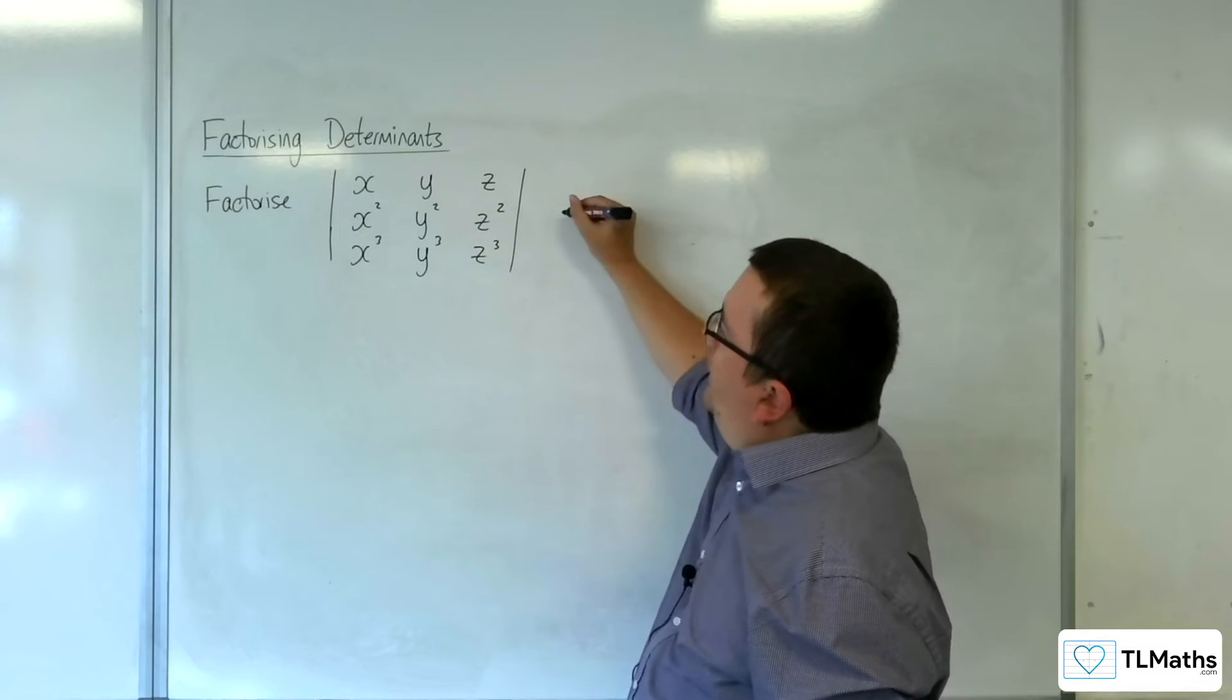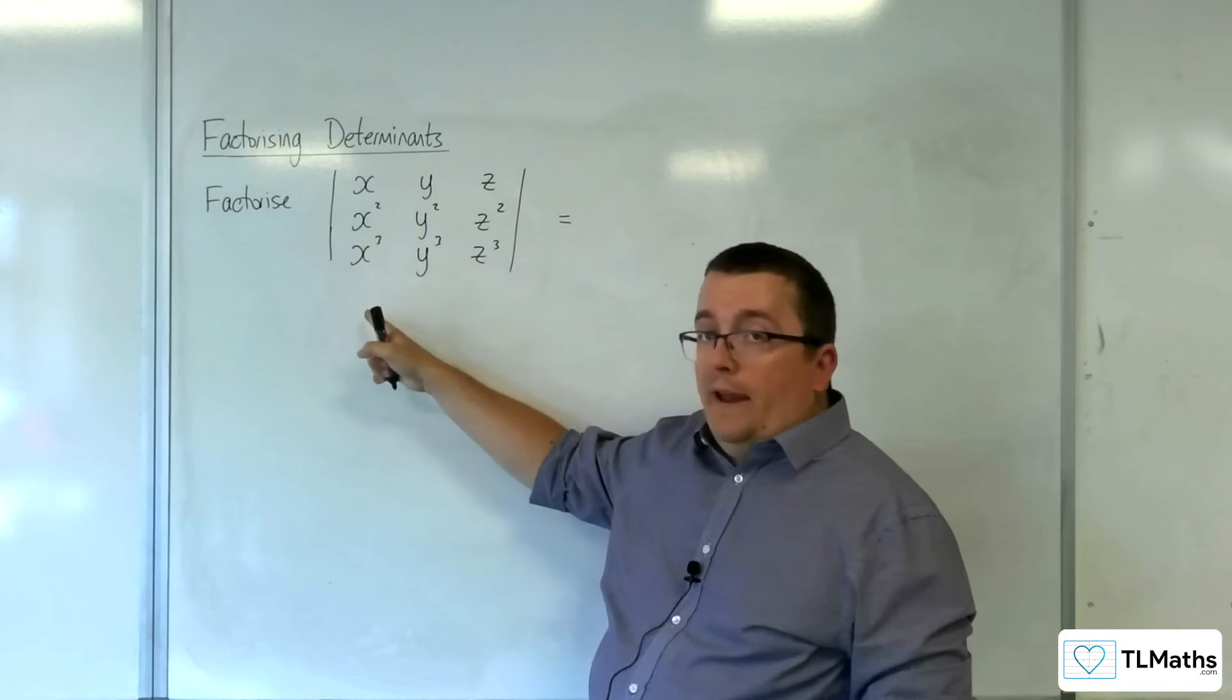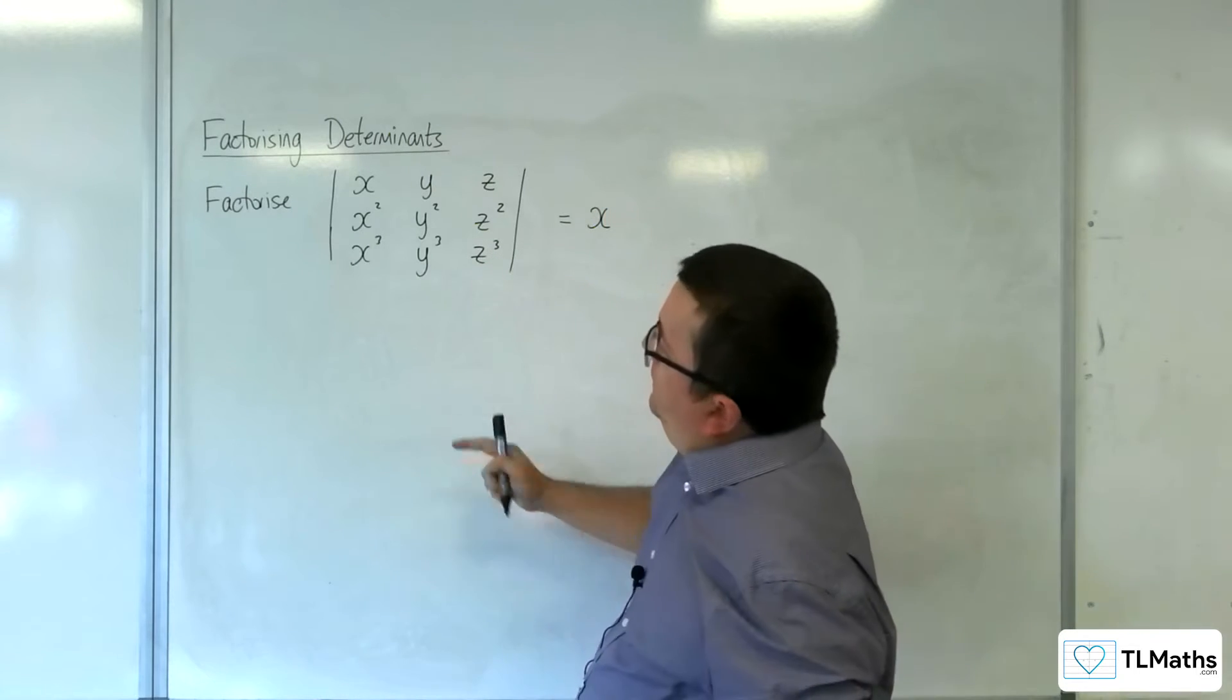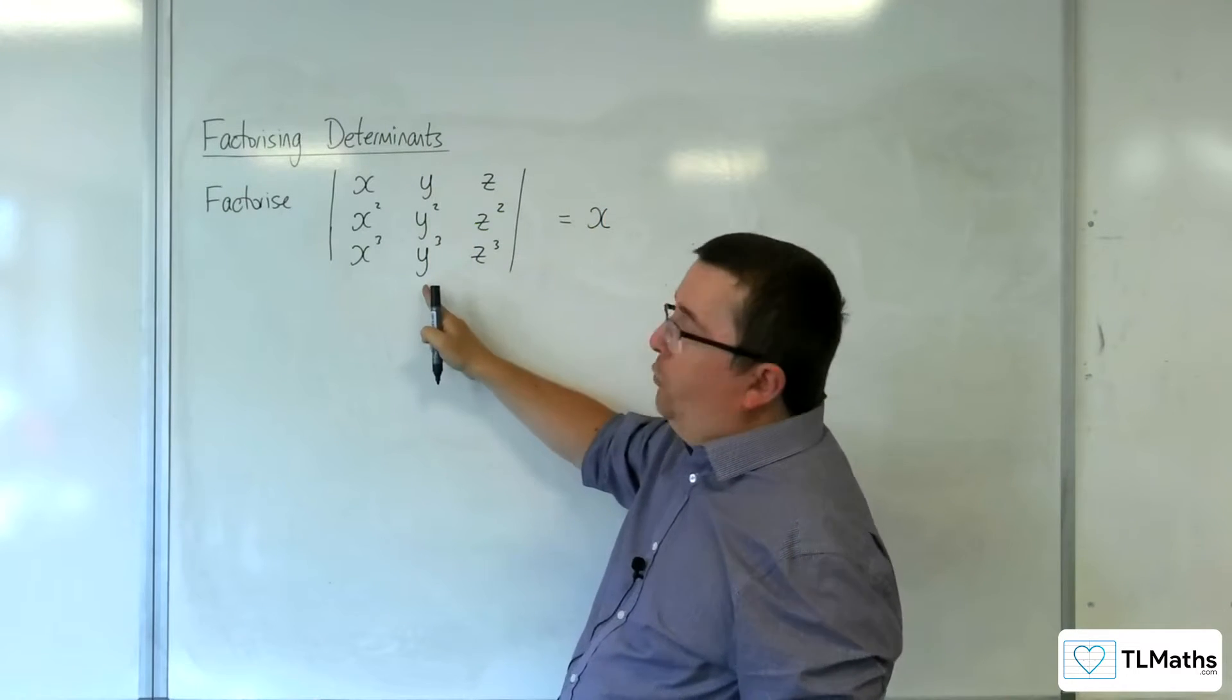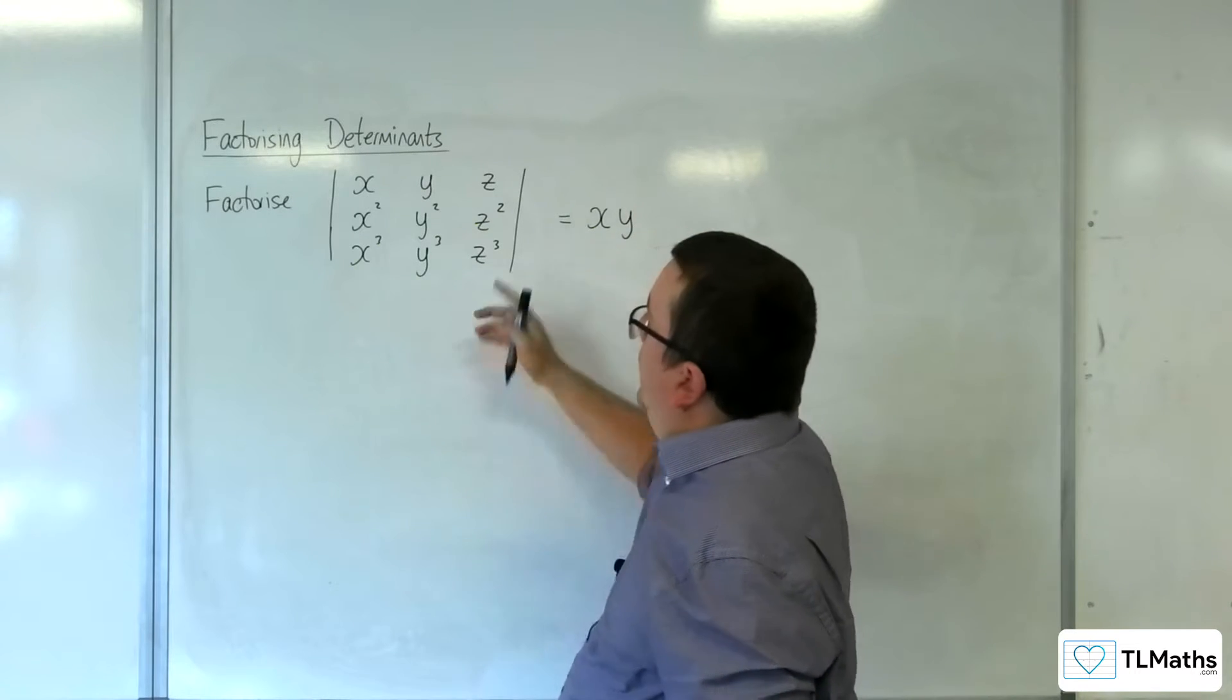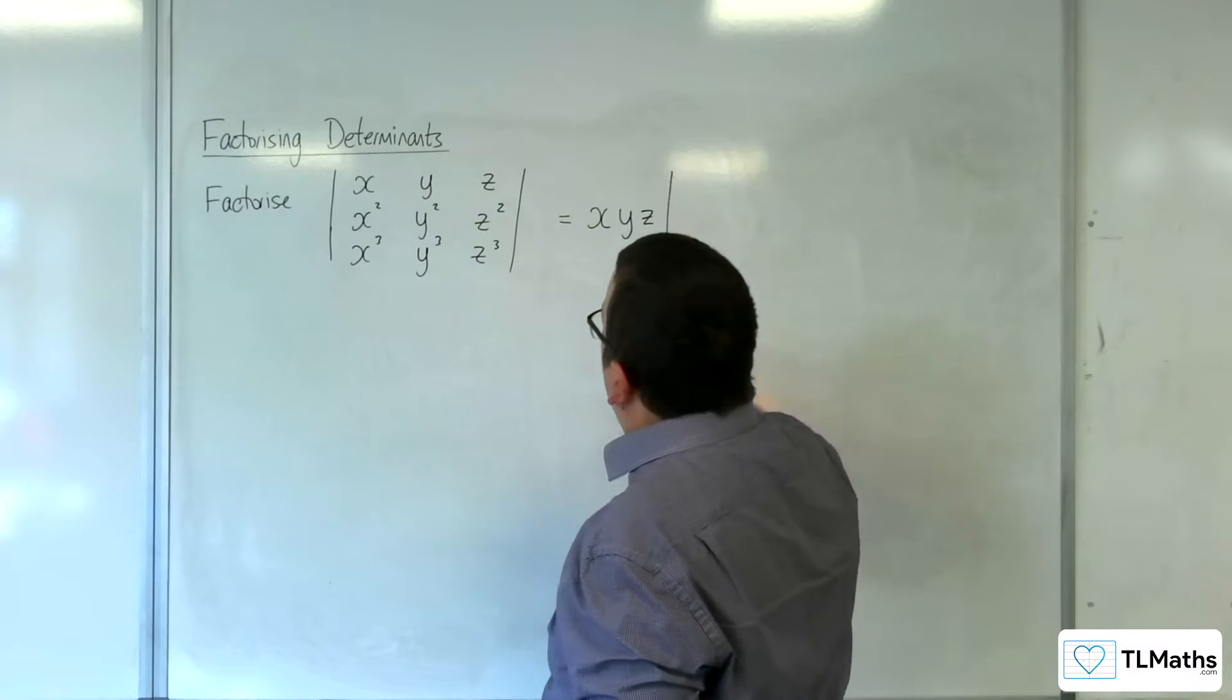The first thing to notice is that the first column has a factor of x, so you can pull x out of the determinant. Then the middle column has y as a factor, so we can factor that out as well. And the final column has z as a factor, so that can come out.